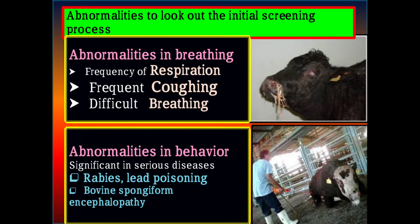What abnormalities should be looked out for during the initial screening process? Several problems can be detected through physical examination. Abnormalities in breathing can be monitored — for example, frequency of respiration, frequent coughing, and difficult breathing or dyspnea may be detected at early stages. If any problem exists, those animals can be called out.